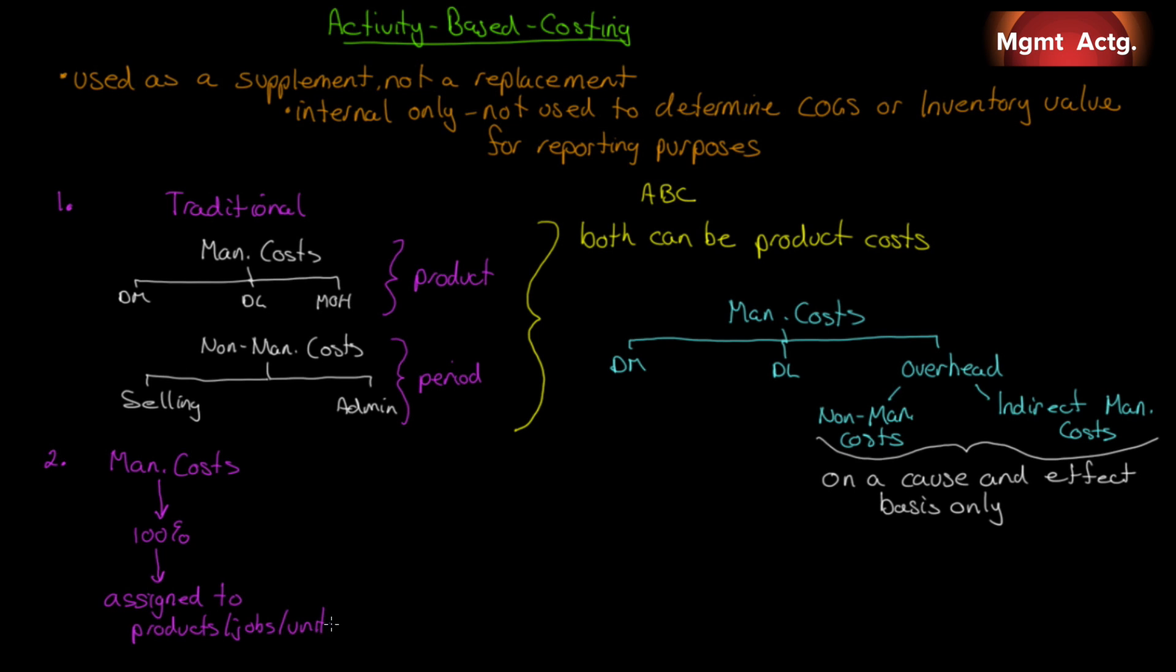Under ABC, that may not be the case. 100% of the manufacturing costs may not be allocated. So, the difference in number one says that non-manufacturing costs can be included. The difference in number two says that some of the manufacturing costs do not have to be included. Only on a cause and effect basis.